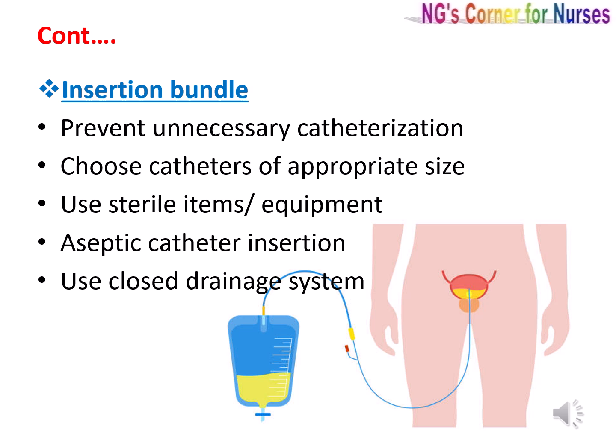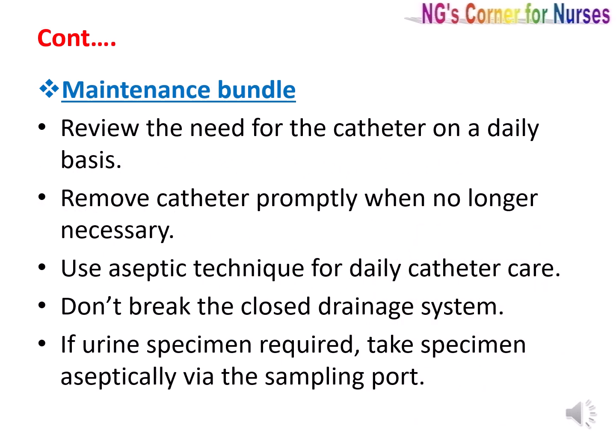The insertion bundle includes: prevent unnecessary catheterization; choose catheters of appropriate size; use sterile items and equipment; aseptic catheter insertion; and use a closed drainage system. For the maintenance bundle: review the need for the catheter on a daily basis; remove catheter promptly when no longer necessary; use aseptic technique for daily catheter care; don't break the closed drainage system; and if a urine specimen is required, take it aseptically via the sampling port. These should be accompanied by a multimodal approach of hand hygiene, healthcare worker education, and feedback of catheter use and CAUTI rates.